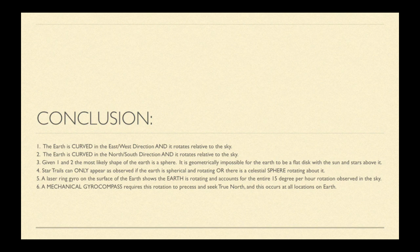Number two, the Earth is curved in the north-south direction, and it rotates relative to the sky as well. Again, we don't know if it's the Earth rotating or the sky rotating. Given number one and two, the only geometric shape that fits is that of a sphere. It is geometrically impossible for the Earth to be a flat plane with the stars and the sun rotating above it. Number four, star trails can only appear as observed if the Earth is spherical and rotating, or there is a celestial sphere rotating about it that contains these heavenly bodies.